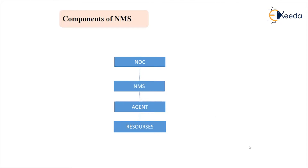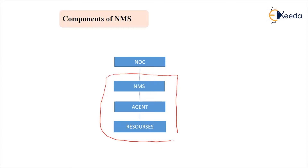As shown in the figure, there are a few main components of NMS. If we are talking about a single network, then inside the network, the first element is resources — meaning different types of objects or network elements. Beyond the network, there is a presence of NOC, that is the Network Operation Center.